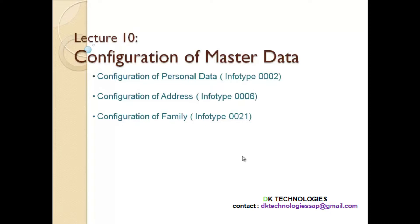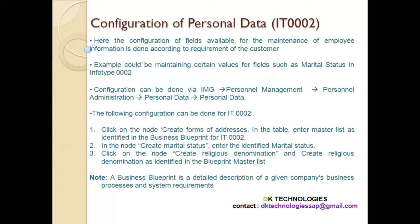We will look at info type 2, info type 6, and info type 21. Info type 2 is personal data, info type 6 is address, and info type 21 is family. Info type 2 has fields like first name, last name, and birth date. First name and last name are free-text fields, meaning you don't have to configure anything for those because they are straightforward name fields.